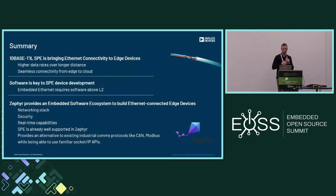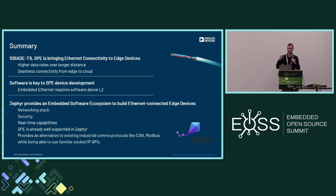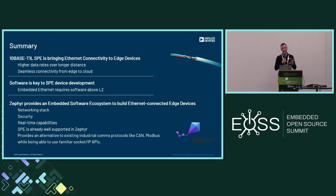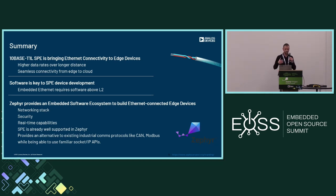To summarize: TenBase T1L single-pair ethernet is bringing long-range ethernet to the edge with 10 megabit per second data rate. Enabling edge devices with ethernet connectivity goes beyond the transceiver — software plays a really important role. Zephyr is a great embedded software ecosystem for developing edge-connected devices with ethernet connectivity, thanks to its native TCP/IP networking stack, security capabilities, and real-time capabilities. Single-pair ethernet is already well supported within Zephyr, so if you're considering your next project requiring robust secure wired connectivity, consider TenBase T1L and Zephyr.